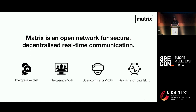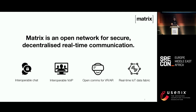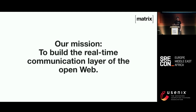Matrix is an open source project, and what it does is to define an open network for secure, decentralized, real-time communication. People use it for interoperable chat — like IRC on steroids — or interoperable VoIP, like SIP on steroids. You could use it for open communication within VR and AR, or as a general-purpose PubSub data fabric for IoT or any other kind of real-time data. The overall idea is that we've tried to build the missing real-time communication layer of the open web.